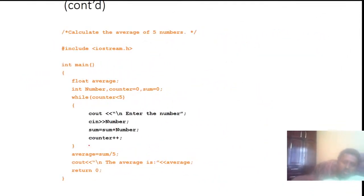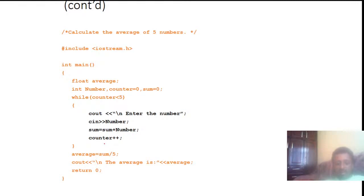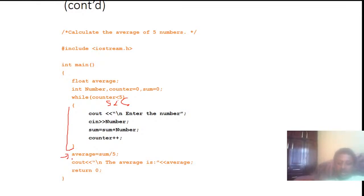The next example calculates the average of five numbers. Declare int number, count = 0, sum = 0. While counter < 5, enter the number, cin number, sum = sum + number, counter++. Until counter equals 5 — then 5 < 5 is false — execution exits this brace and calculates the average, printing the average value, then return 0.